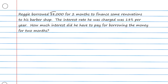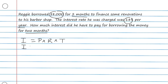Let's do another example. Reggie borrowed $8,000 for two months to finance some renovations to his barbershop. The interest rate he was charged was 18% per year. How much interest did he have to pay for borrowing the money for two months? We state our formula: I equals PRT. The principal is $8,000, the rate is 0.18, and the time must be expressed in years since the rate is per year.